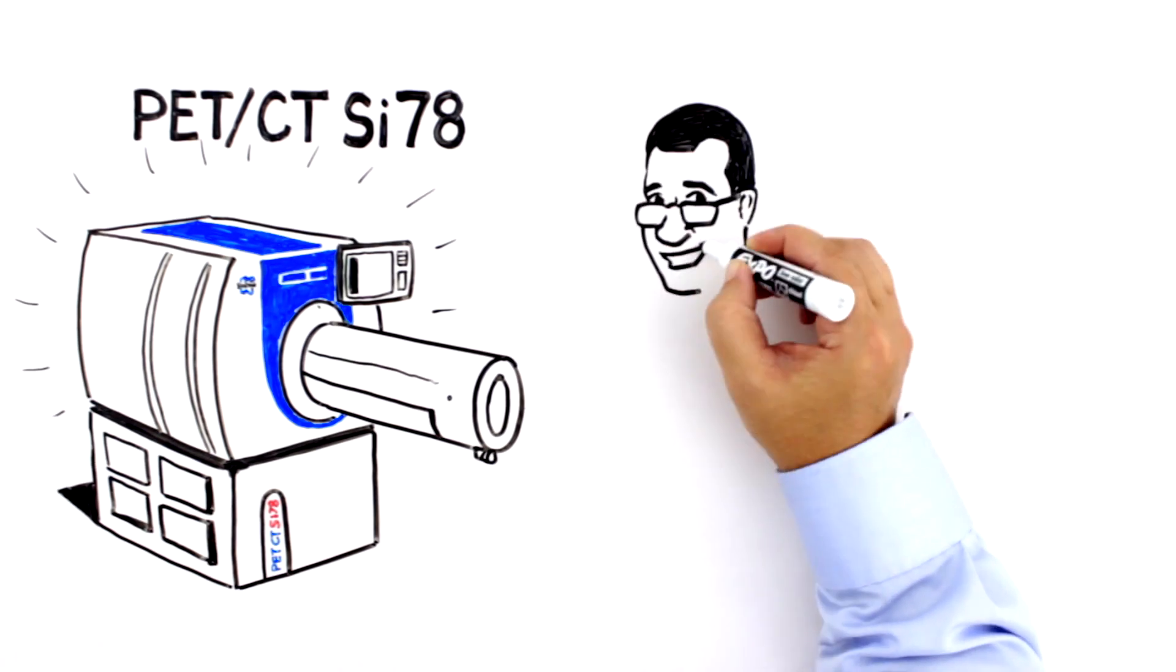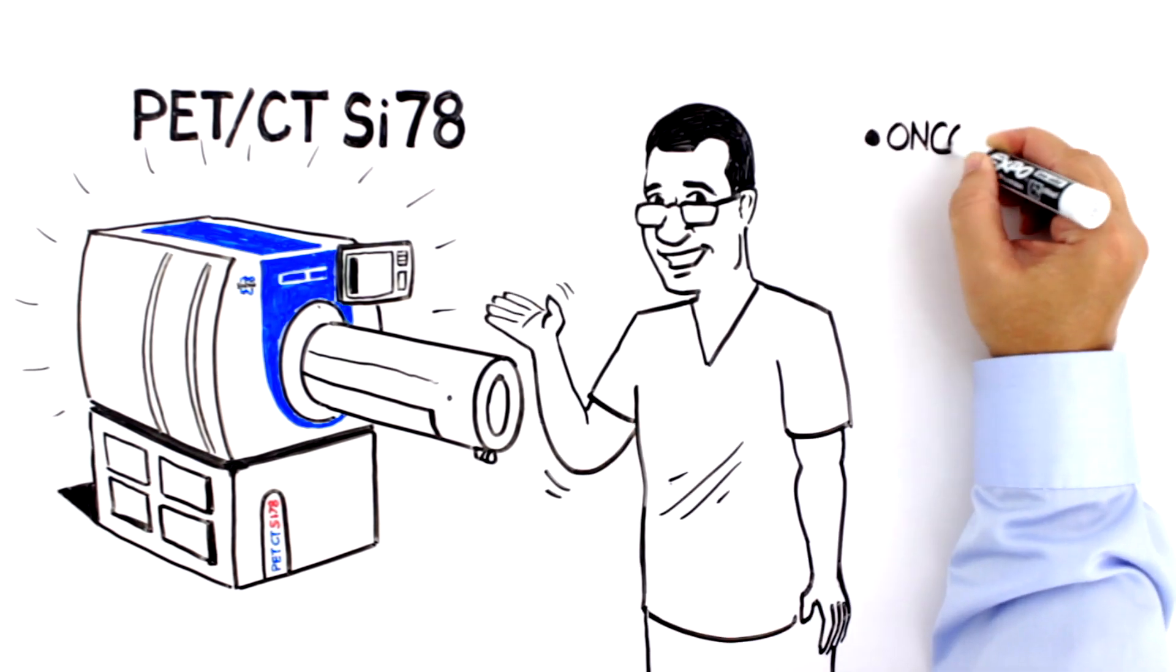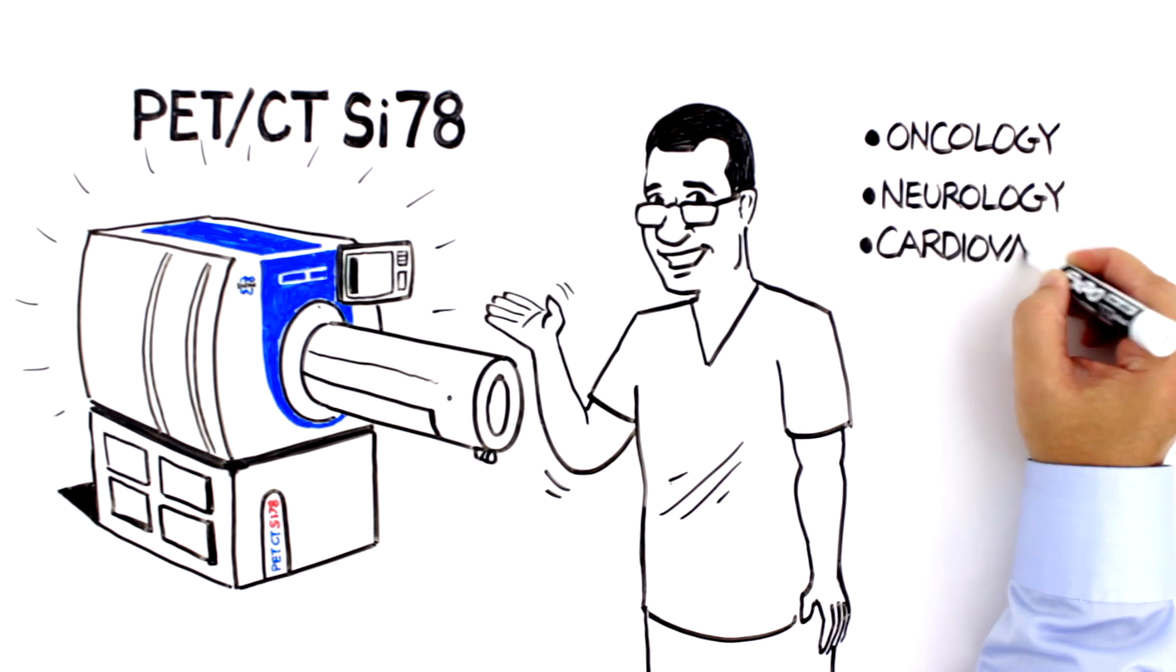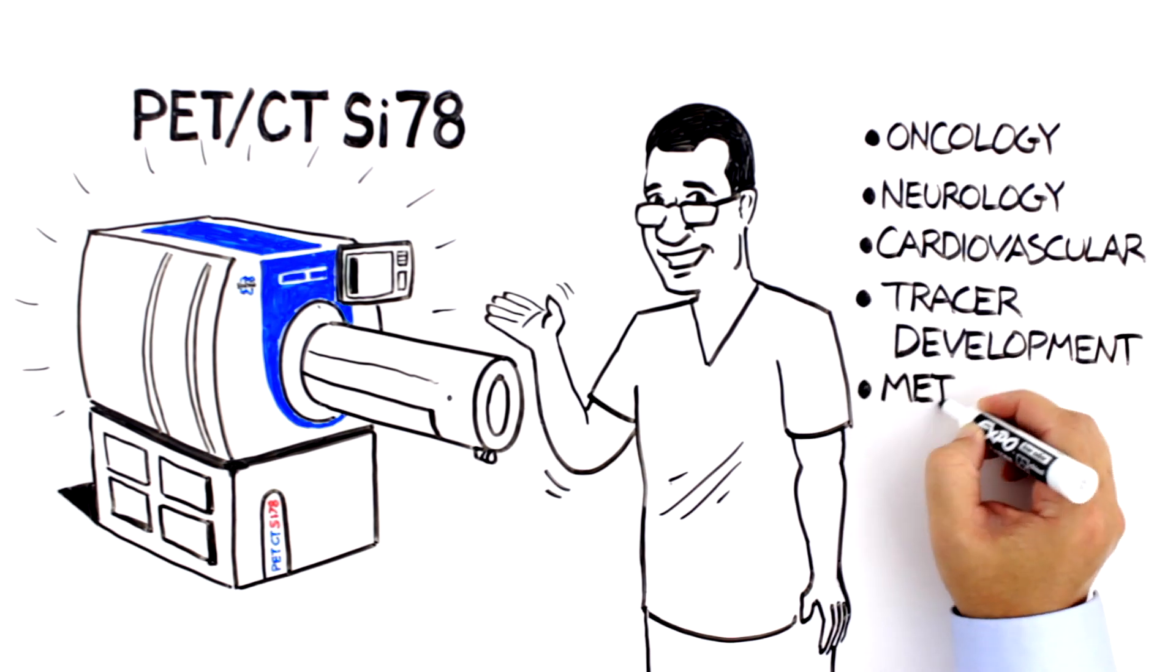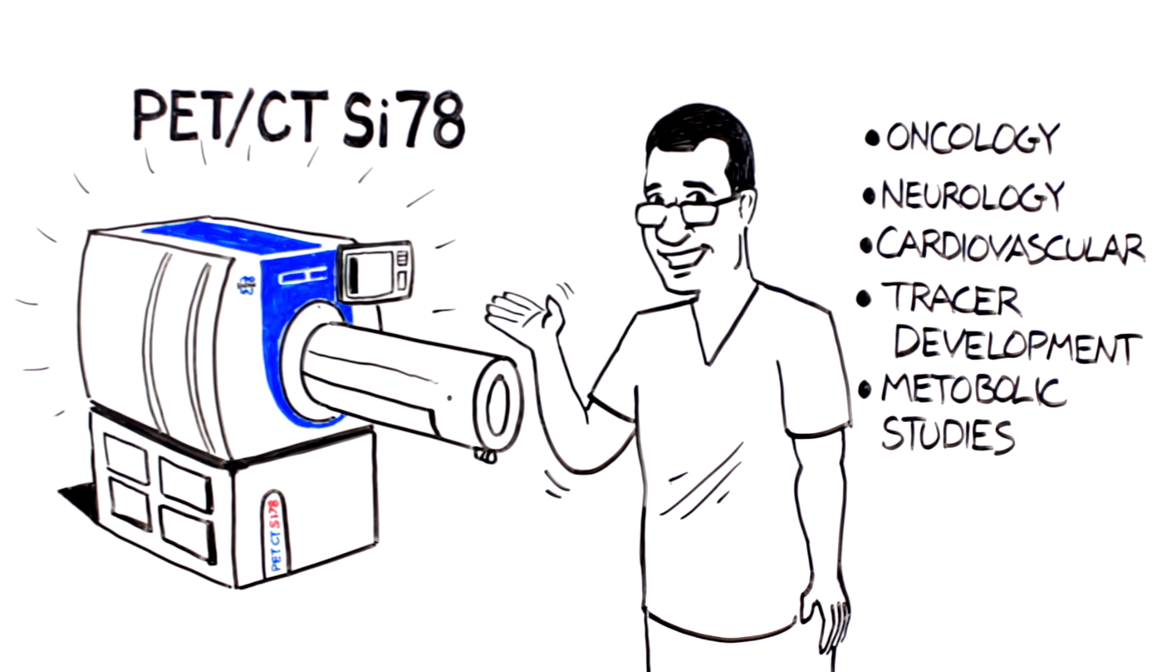The Bruker PET-CT is the ultimate tool for oncology, neurology, cardiovascular, tracer development, and metabolic studies. Whatever your area of research is, Bruker PET-CT SI78 offers accurate results with true quantification.